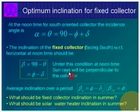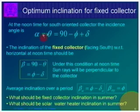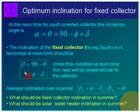Beta changing every day means you have to tilt your module on a daily basis. So β = 90° − θ, and putting that in: β = φ ± δ, since delta can be plus or minus. Now because delta keeps changing every day, beta should also keep changing every day, which is again a problem because you cannot tilt your modules on a daily basis practically.